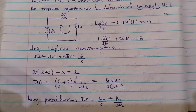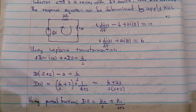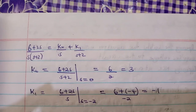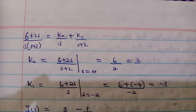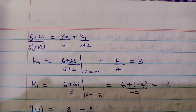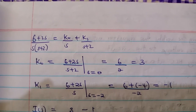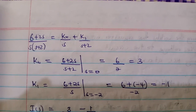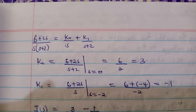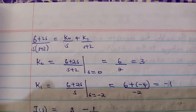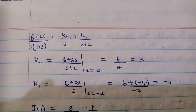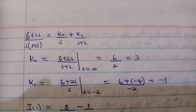To determine the equivalent expression, we apply partial fractions. Many students are unsure of the simple way to determine partial fractions of a polynomial. For example, the partial fraction of (6 + 2s) / [s(s + 2)] equals k₀/s plus k₁/(s + 2). We are transforming a fraction into simpler fractions — in other words, breaking up a ratio of polynomials.